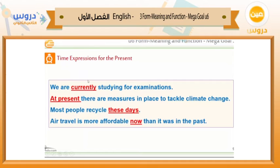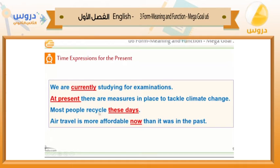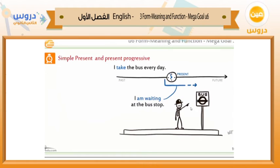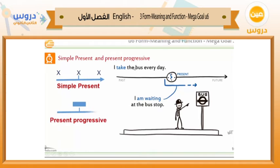Time expressions for the present: you can use 'currently' — 'We are currently studying for examinations.' 'At present' — 'At present there are measures in place to tackle climate change.' 'These days' — 'Most people recycle these days.' 'Now' — 'Air travel is more affordable now than it was in the past.' Here are two sentences: 'I take the bus every day' — simple present. 'I am waiting at the bus stop' — present progressive, meaning he is waiting now.